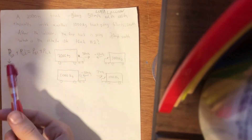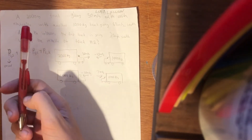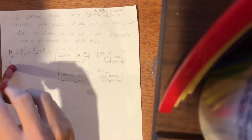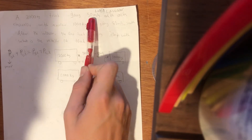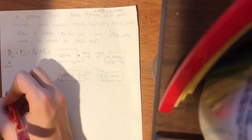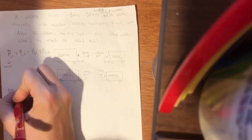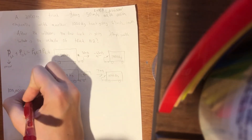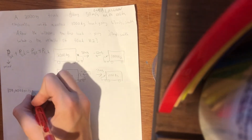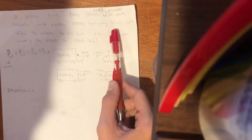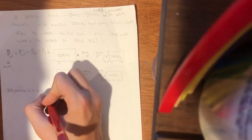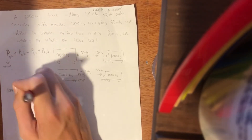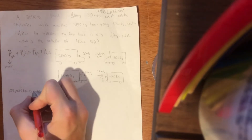So if we plug in our numbers to this equation, mass times velocity of truck number one initially is 2,000 times 50 meters per second, and the result is 100,000 kilogram meters per second. For truck number two, we do 65 meters per second times 1,000 kilograms and we get 65,000 kilogram meters per second. This is actually negative because this truck is going south, so south is going to be our negative.